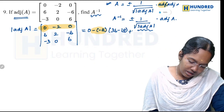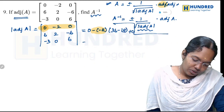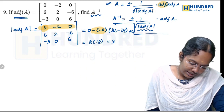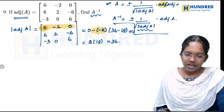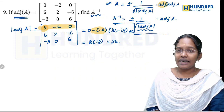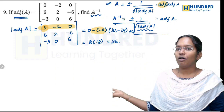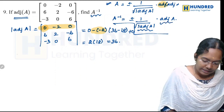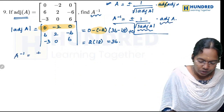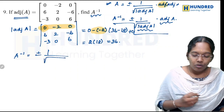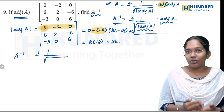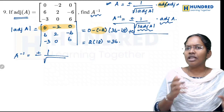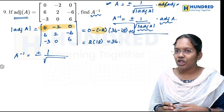The last term is 0. So 2 into 18 equals 36. We need to find the determinant value of adjoint A. We substitute directly into the formula. The determinant of adjoint A value is 36. Note that modulus here refers to the matrix determinant.